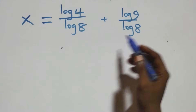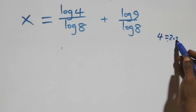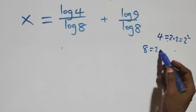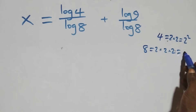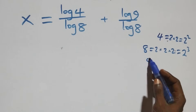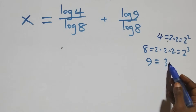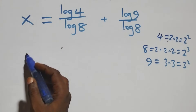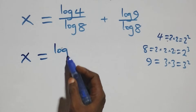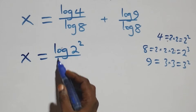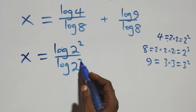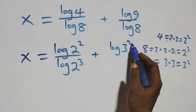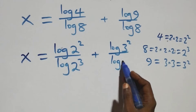We can write 4 as 2 times 2, which is 2 squared. Also, 8 can be expressed as 2 times 2 times 2, which is 2 raised to power 3. And 9 can be written as 3 times 3, which is 3 squared. So all we have becomes x equals to log 2 squared over log 2 raised to power 3, plus log 3 squared over log 2 raised to power 3.